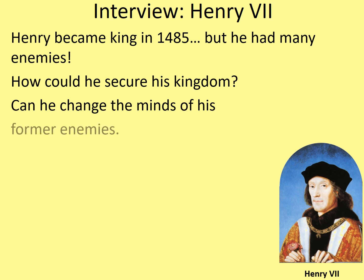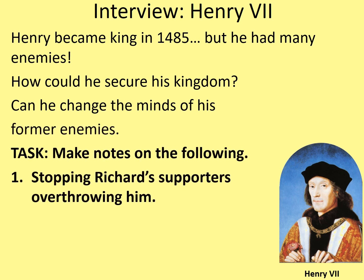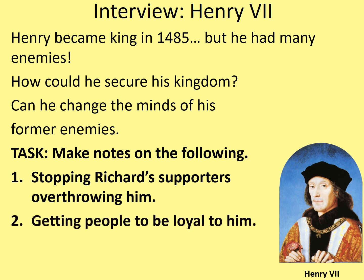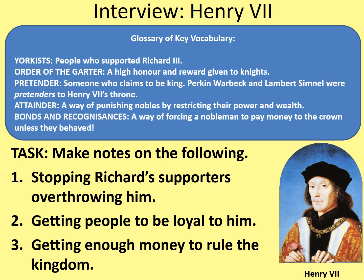Your task is to make notes on the following: how Henry intended to stop Richard's supporters from overthrowing him; secondly, getting people to be loyal to him; and thirdly, getting enough money to rule the kingdom. Some words that Henry may mention are in this glossary: Yorkists, Order of the Garter, pretender, attainder, bonds and recognisances. If he mentions these words and doesn't explain them fully, refer to the glossary and include them in your notes.